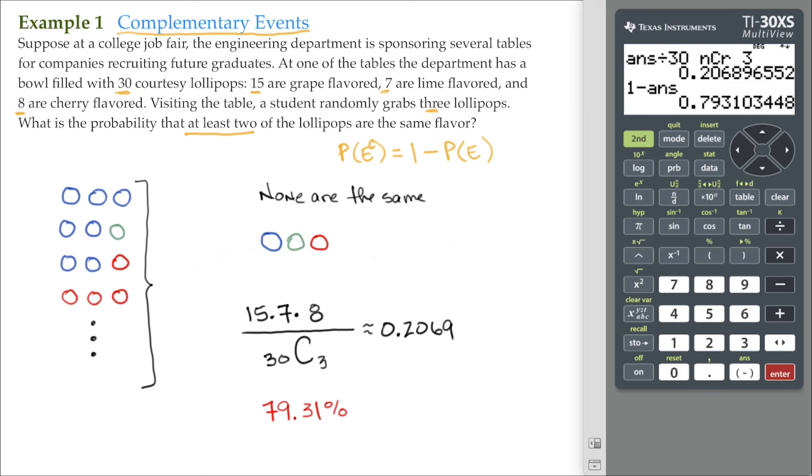So the idea of using a complement of a probability works well when we are addressing a scenario that has something like at least or a more than circumstance. Because rather than dealing with several outcomes, we can use the complement to simply ease our work. And there we go.